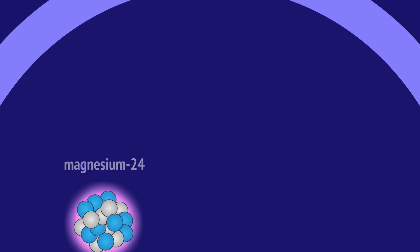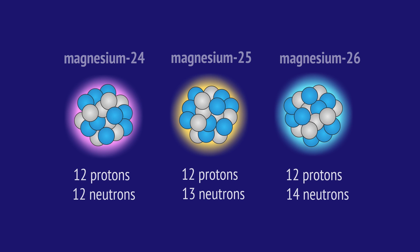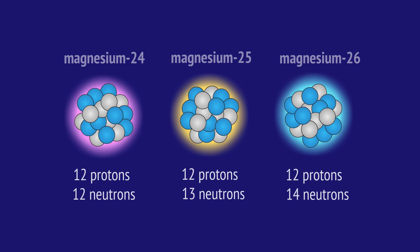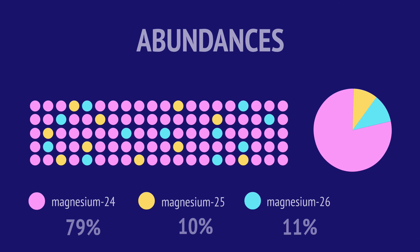In this video, we've seen that isotopes are atoms with the same number of protons but a different number of neutrons and therefore a different mass. We've looked at the abundance percentages of isotopes to show the relative proportions of each isotope on Earth.